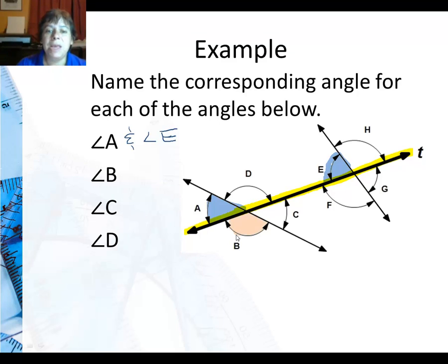Angle B is below the transversal, so I'm looking for either F or G, and it's to the left of the line, which means angle F is the corresponding angle for angle B. And I'll leave you to find the corresponding angles for C and D.